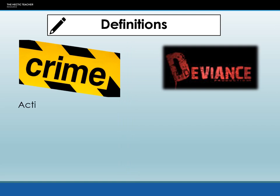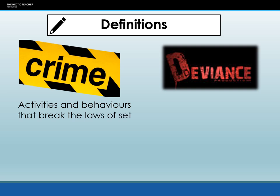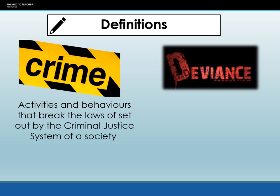When discussing this topic we need to make sure that we are clear on what we mean by crime and deviance. Crime is an act or behavior which goes against the laws of society. They are laws that are created by the government and punishable by the criminal justice system. For example, it is a criminal act to steal or to take things that don't belong to you.